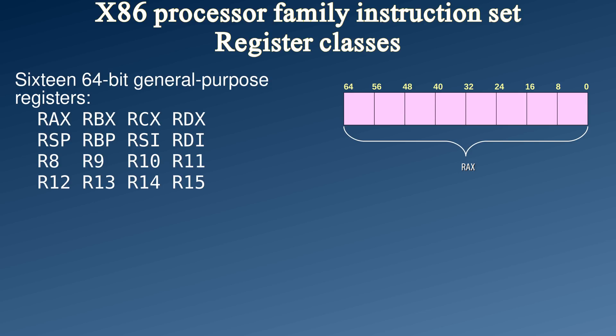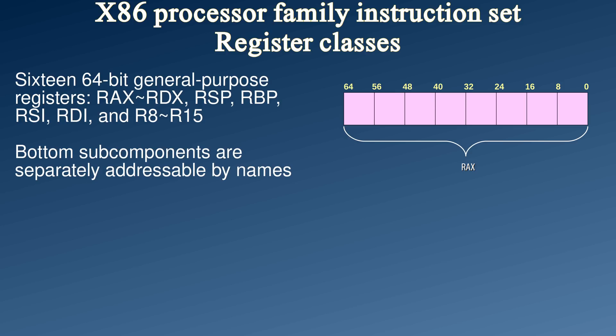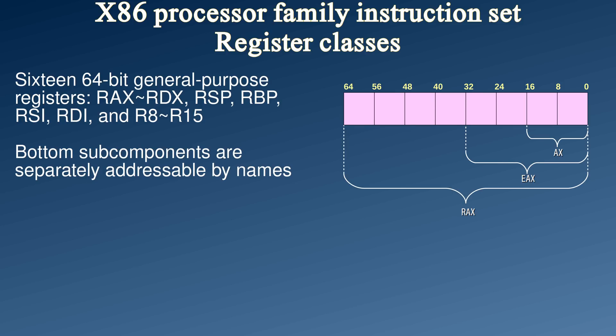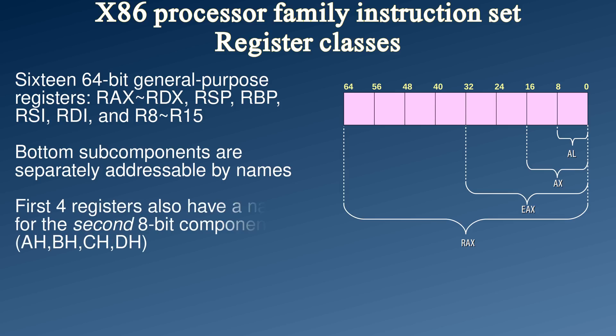This architecture defines 16 base registers called RAX, RBX, RCX, RDX, RSP, RBP, RSI, RDI, and R8 through R15. These registers are 64 bits wide, but their lower half is accessible by a separate name. The lower half of that is also accessible by a separate name, and the lower half of that is accessible by a separate name, but for the first four registers, so is the upper 8-bit half of the lowest 16 bits.